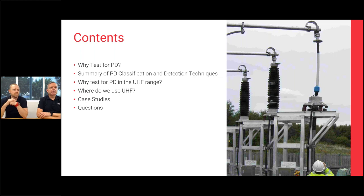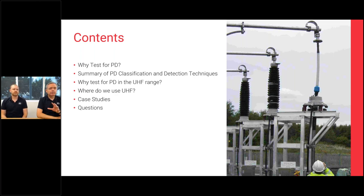So the content we're going to cover today: we'll briefly cover why we test for PD, the different types of partial discharge, and the different detection techniques for non-intrusive detection of partial discharge. We're specifically going to talk about UHF today — why we bother using the UHF range, where we do it, what specific use cases bring out the UHF techniques — and Brad is going to cover a good few case studies to show how we use it in practice.